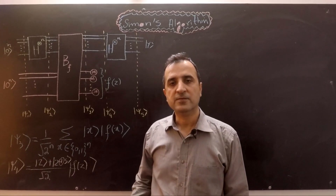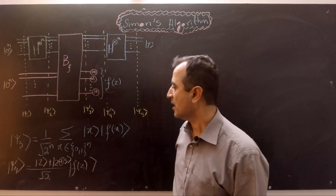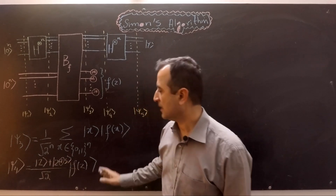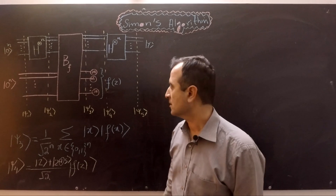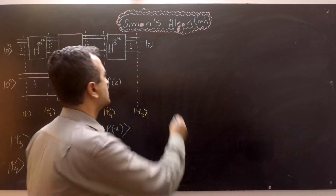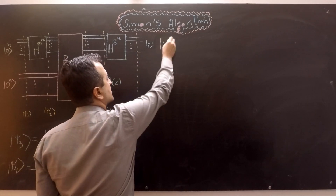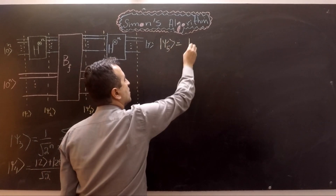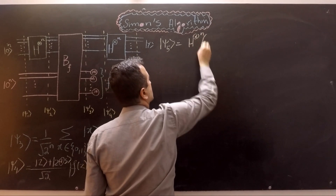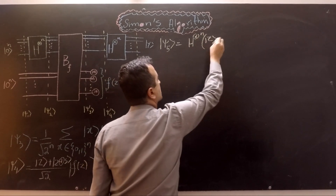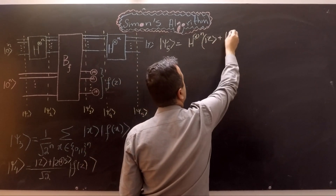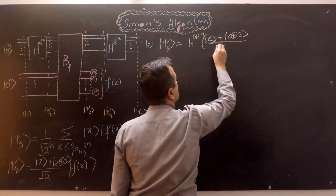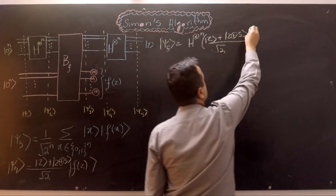In the fifth stage, |ψ5⟩, we apply the Hadamard gate on the first register while keeping the second register untouched. So |ψ5⟩ is the result of the Hadamard gate applied to the first register while keeping the second register untouched.